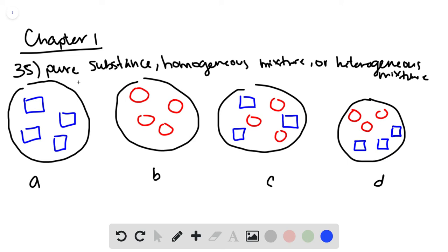Remember that a pure substance is composed of a single type of particle, like A and B here. So these two are pure substances.